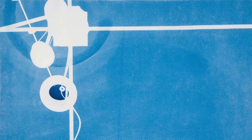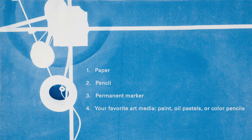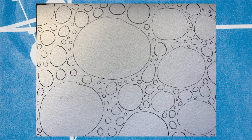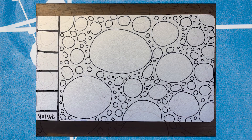Now we're going to create our own artworks inspired by value. For this activity you will need paper, pencil, a permanent marker, and your favorite art media like paint, oil pastels, or color pencils. On one side of your paper, with your pencil, create a column of boxes to create a value chart. Fill in the rest of your paper with your favorite shape in different sizes — some of them will be big and some of them will be small. Outline your value chart and shapes with permanent marker.